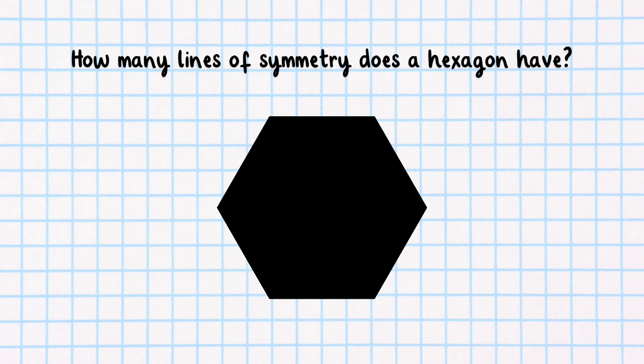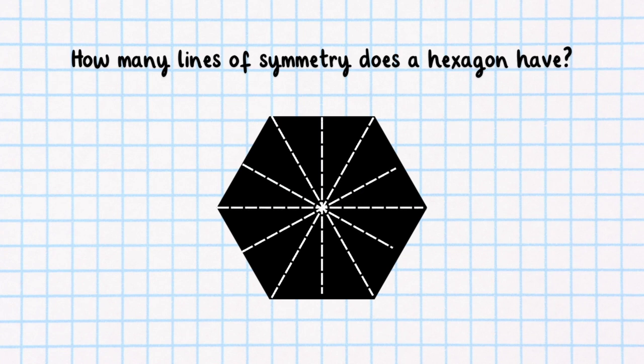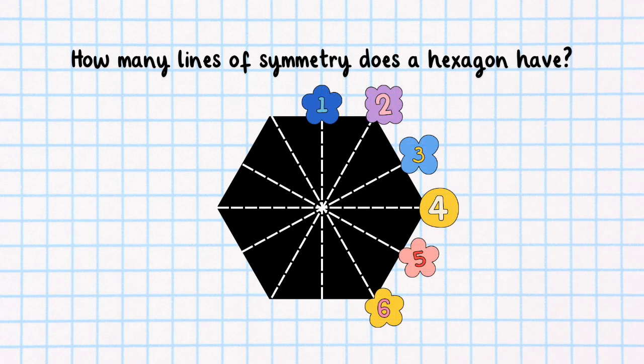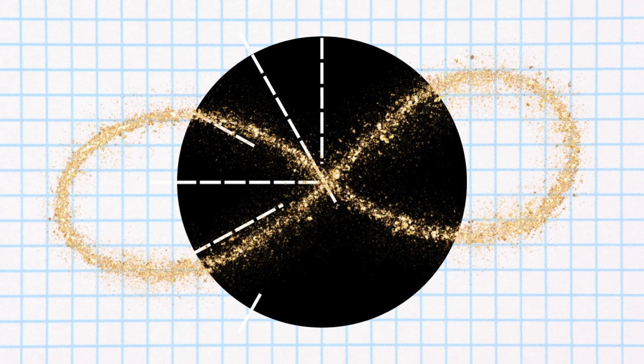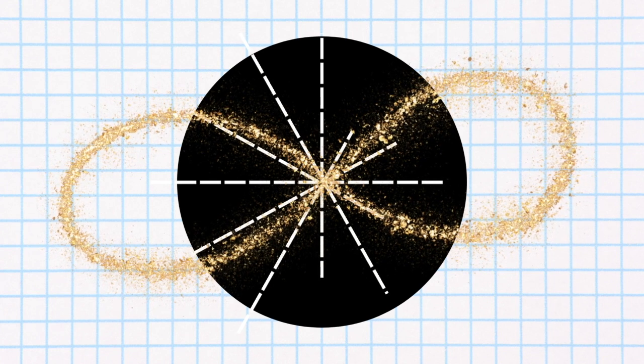And this hexagon? A hexagon has six lines of symmetry. Oh, and here's a mind blower: a circle has infinite lines of symmetry. Infinity!